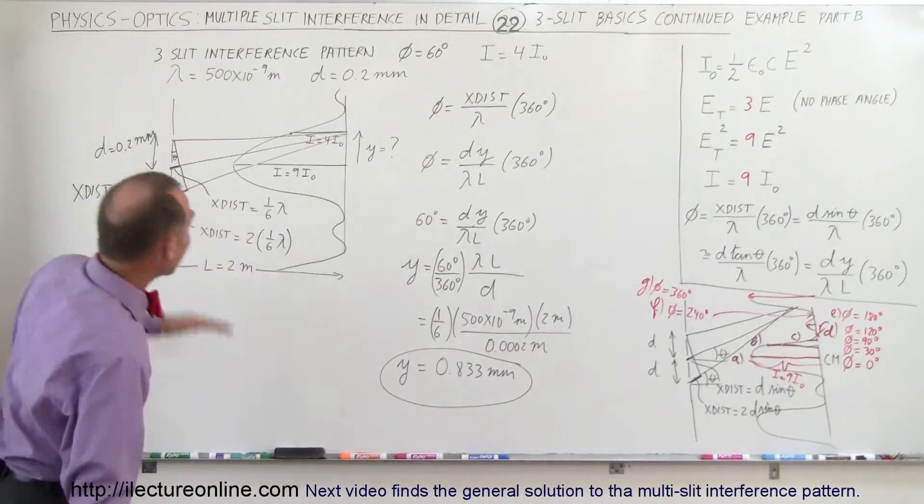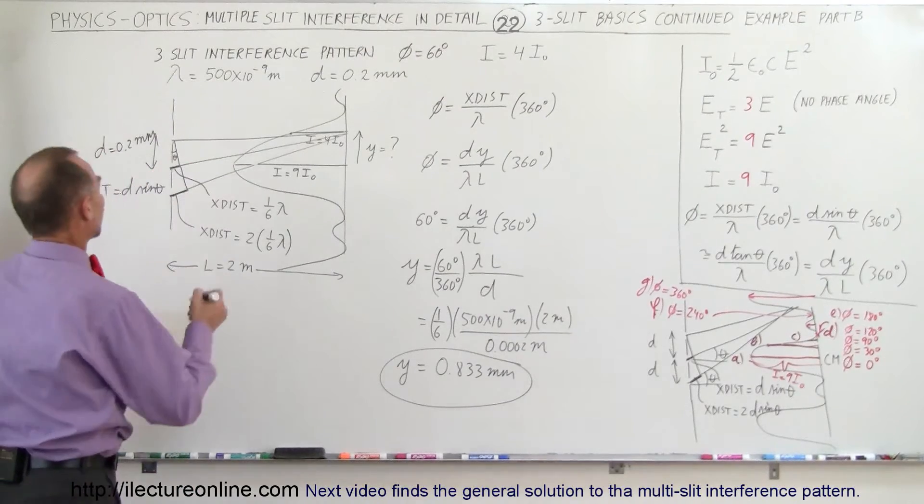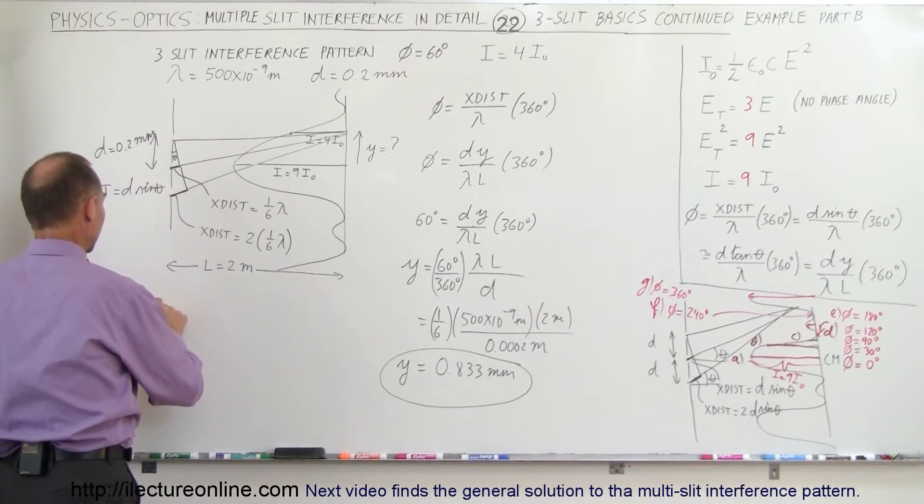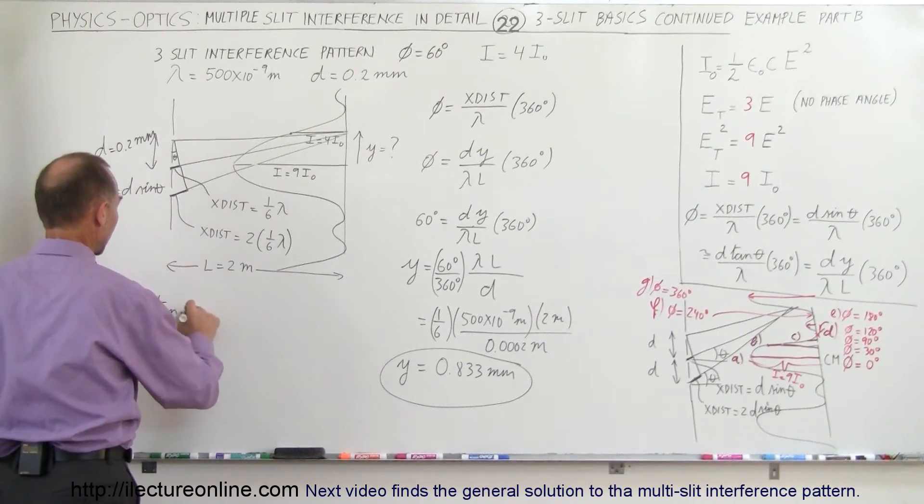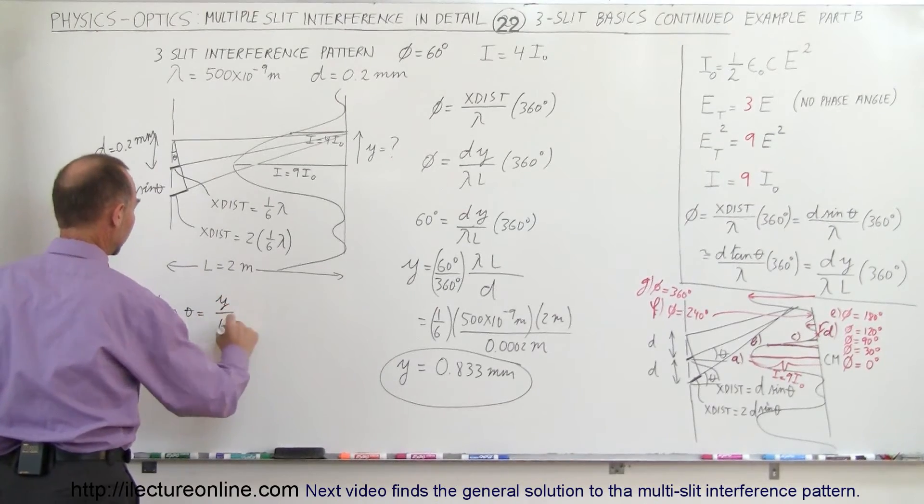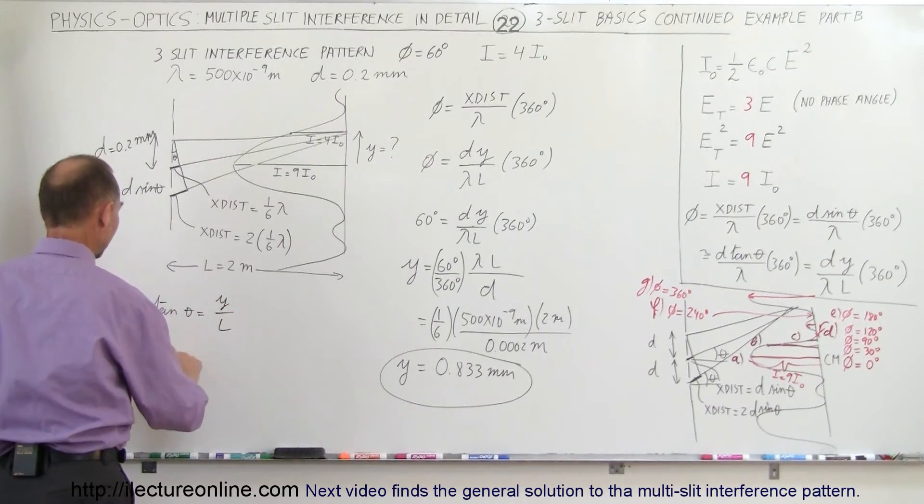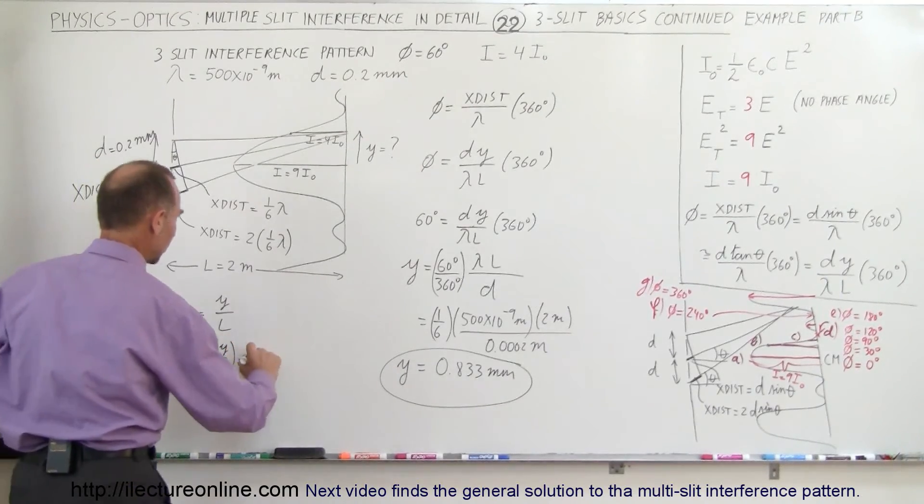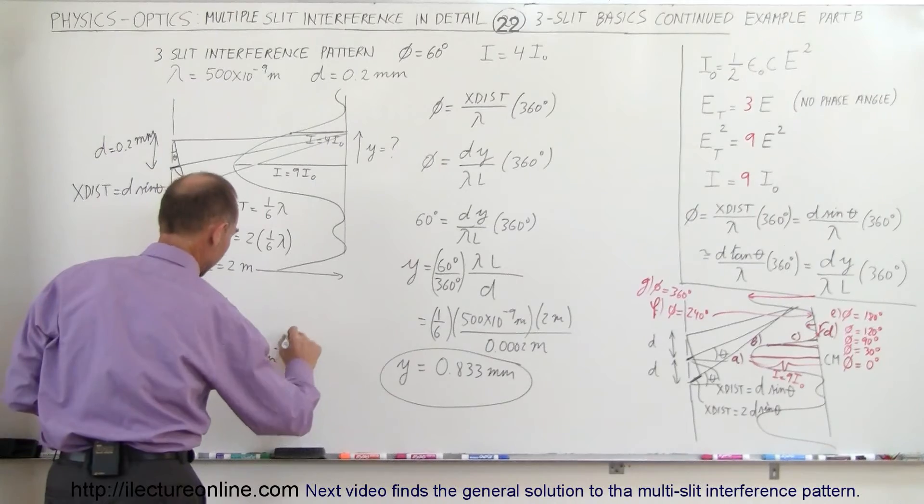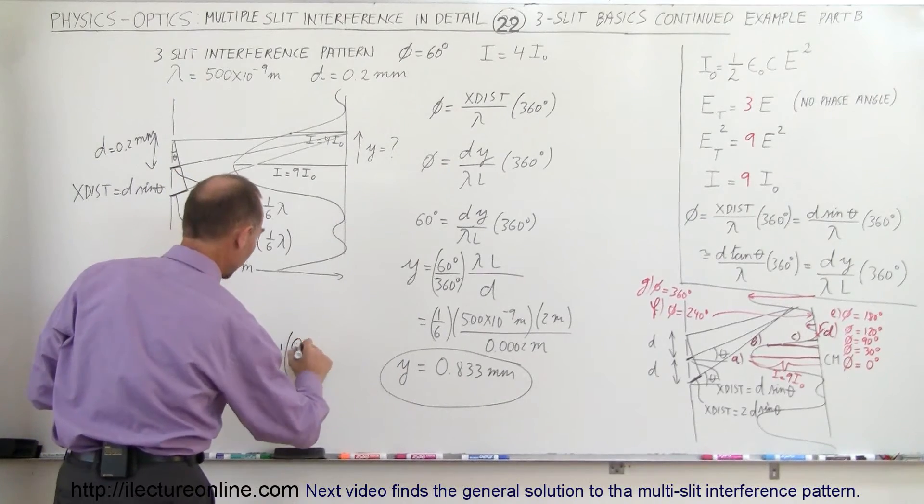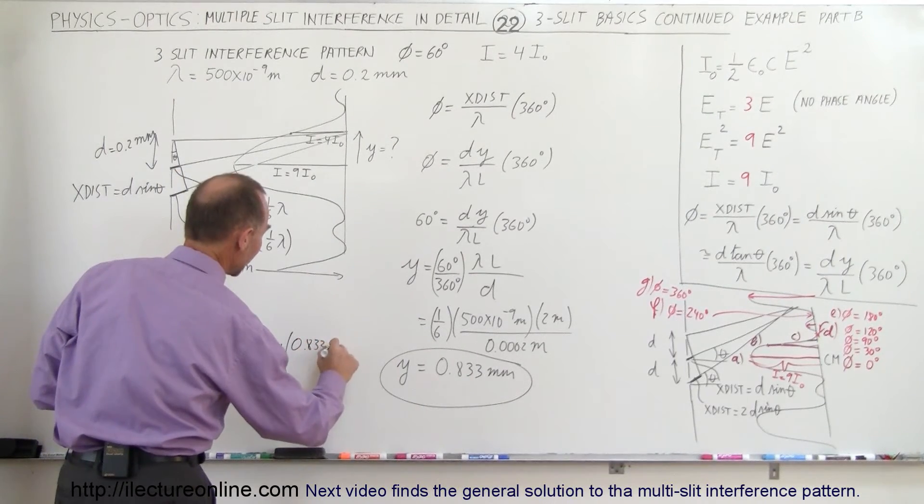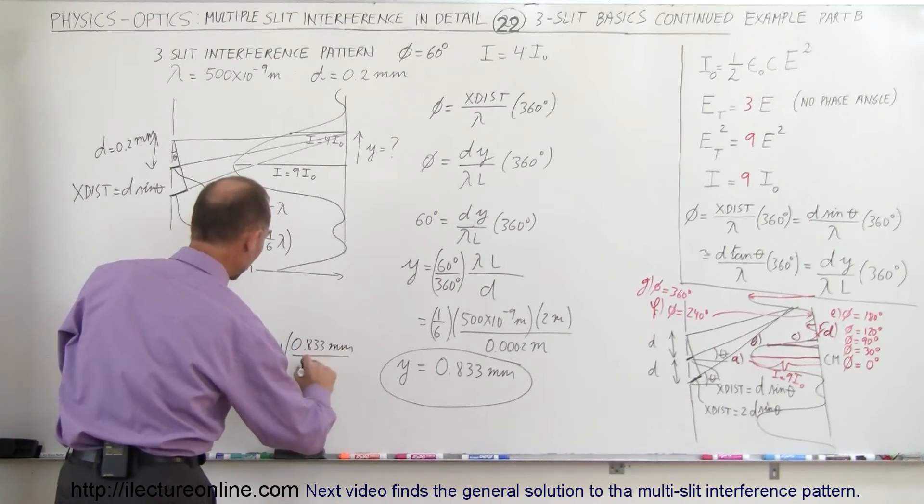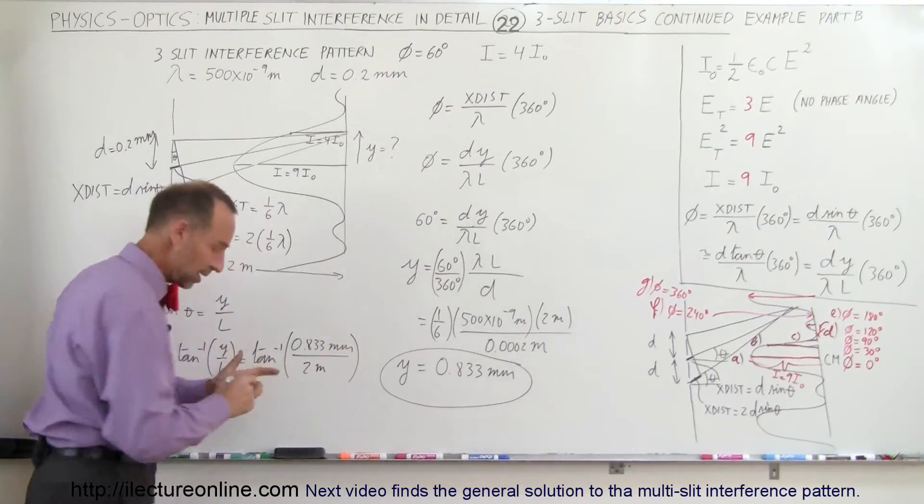Now, what if you wanted to find the angle theta? So you can say that we know that the tangent of theta is equal to y over L, so we know that theta is equal to the arc tangent of y over L, which is equal to the arc tangent of 0.833 millimeters divided by L, which is 2 meters.